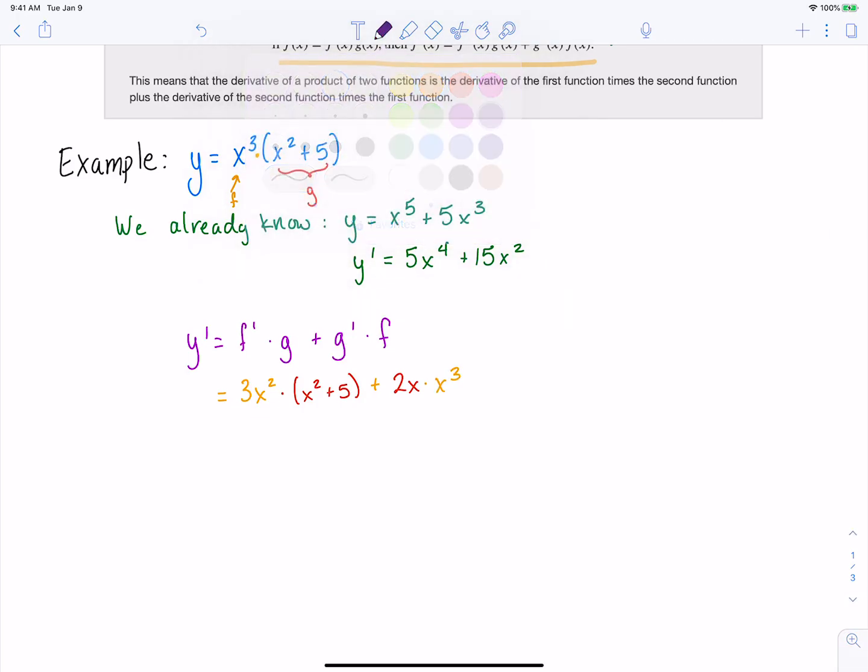So let's do the distributive property. Let's get everything kind of simplified here. 3x²(x² + 5) + 2x(x³), which gives us 3x⁴ + 15x² + 2x⁴. Combining like terms, we get 5x⁴ + 15x².